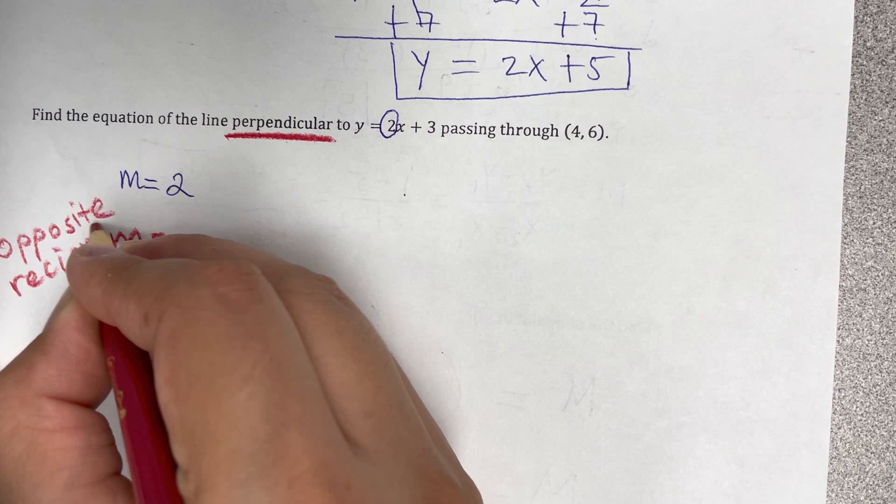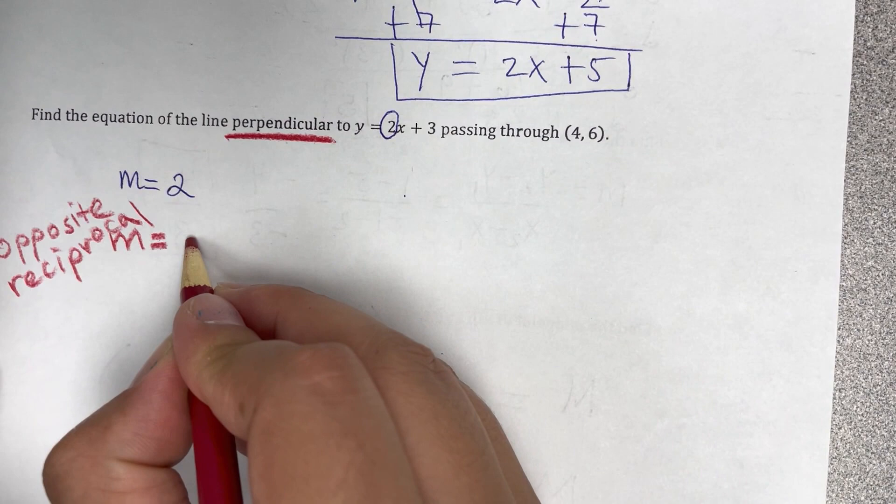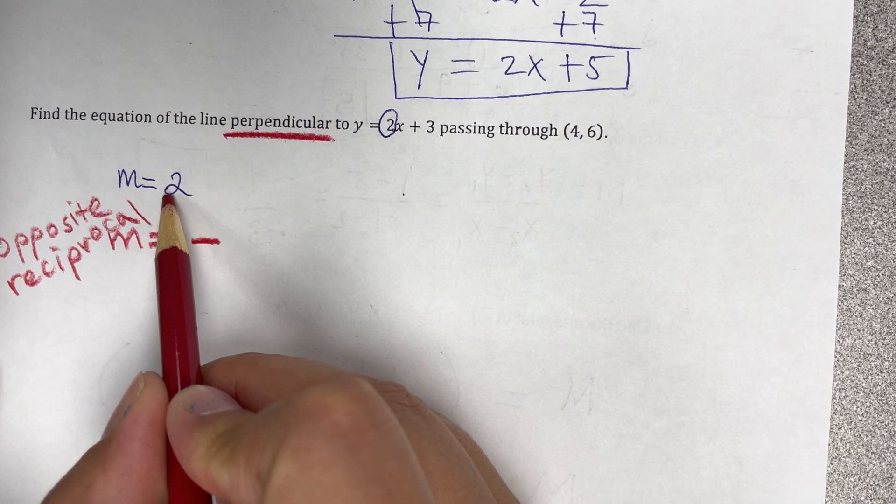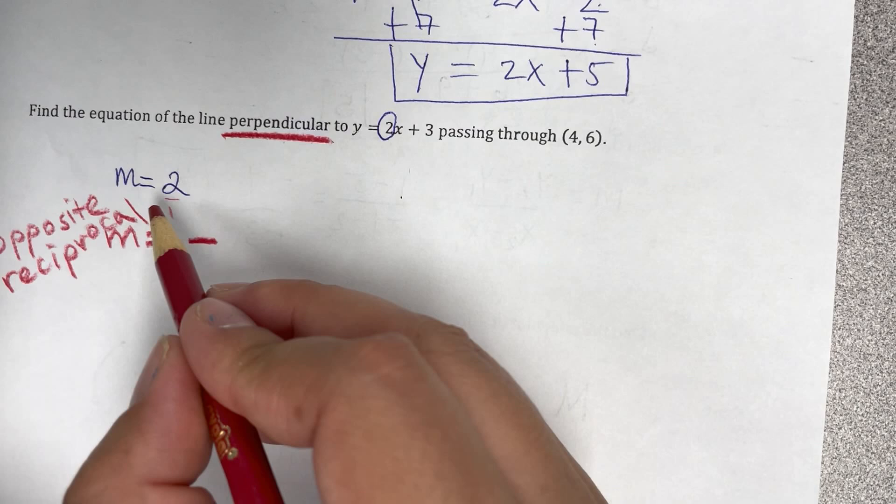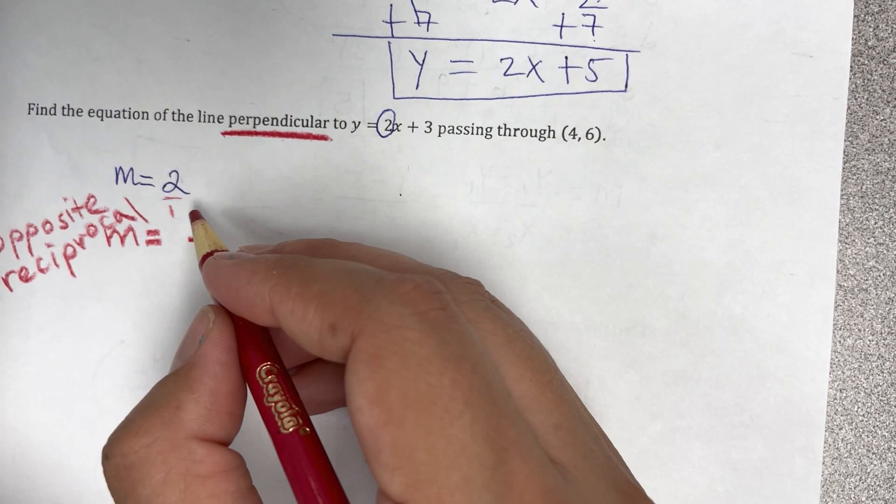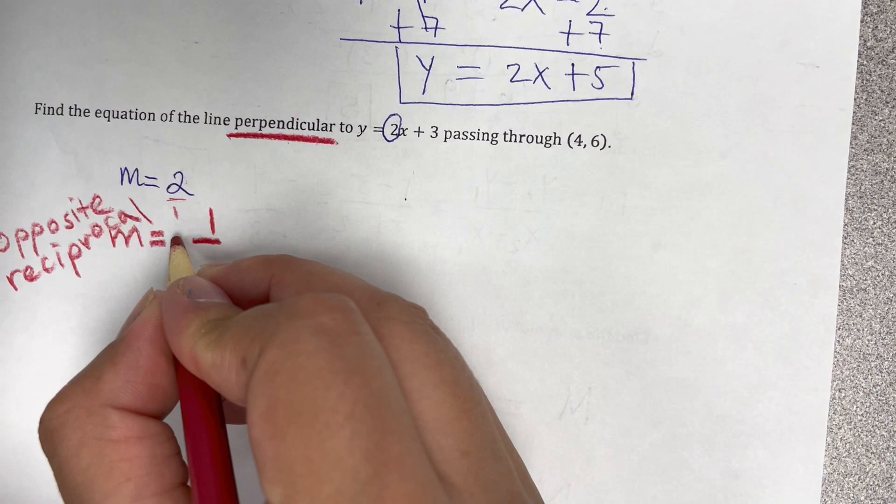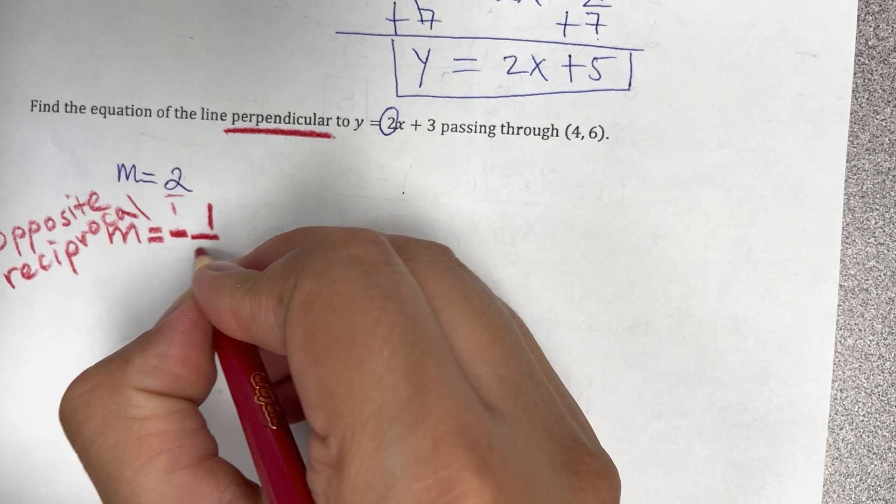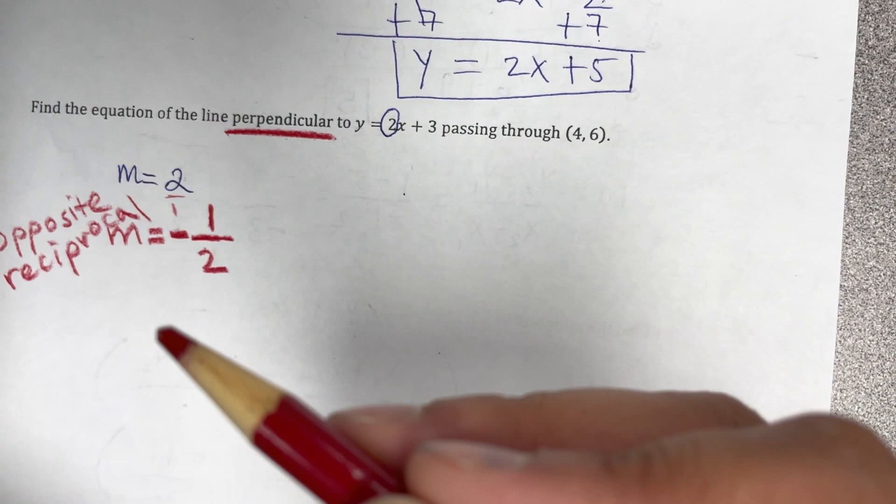Opposite quiere decir que cambia el signo. Since this is positive, my new slope is going to be negative. Y también aprendimos que el reciprocal es cuando se cambian el numerador y denominador. So como no hay denominador, se pone sobre uno, and it's going to be 1 over 2 instead of 2 over 1. So the two, the one goes up, the two goes down. Negativo, un medio. Negative 1 half. Cambiamos el signo, cambiamos el numerador y denominador. ¿Por qué? Porque es perpendicular.